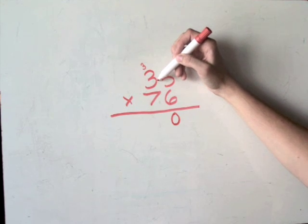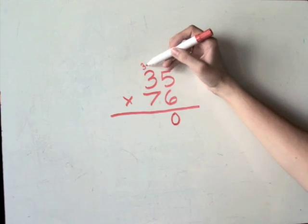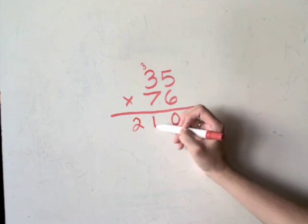Then you multiply 3 times 6, you get 18. Then you add the 3 so you end up with 21.